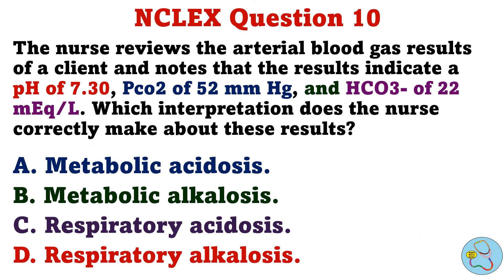Question 10. The nurse reviews the arterial blood gas results of a client and notes that the results indicate a pH of 7.30, PCO2 of 52mm of mercury, and HCO3 of 22 mEq per liter. Which interpretation does the nurse correctly make about these results? A. Metabolic acidosis. B. Metabolic alkalosis. C. Respiratory acidosis. D. Respiratory alkalosis.